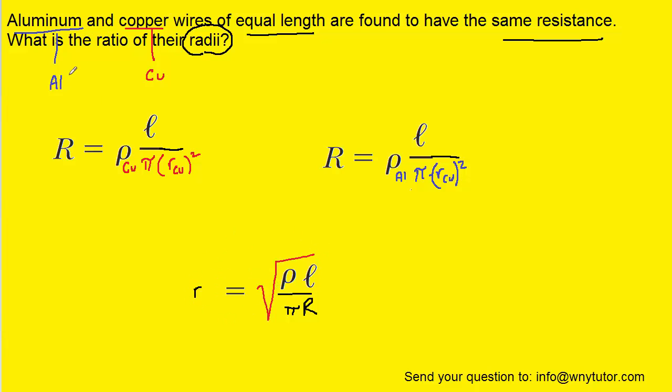Now this will become useful because the question is asking us for a ratio. Remember a ratio simply means to divide two quantities. So what we can do to establish that ratio is to take the radius of the aluminum wire and divide it by the radius of the copper wire.